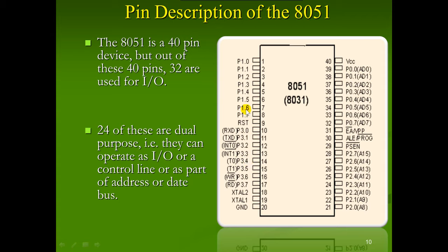Port 2, Port 1, Port 0, and Port 3 can act as output ports as well as control lines. The pins include receiver, transmitter, Interrupt 0, Interrupt 1, Timer 0, Timer 1, read/write bar, XTAL1 and XTAL2 for crystal oscillator frequency, ground, VCC, and 8-bit address/data lines.